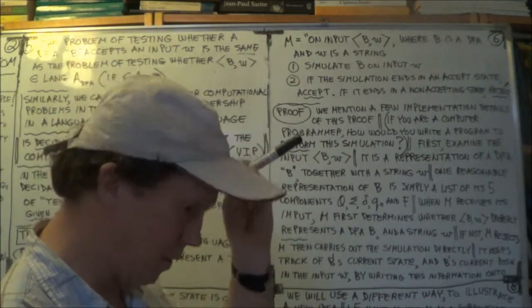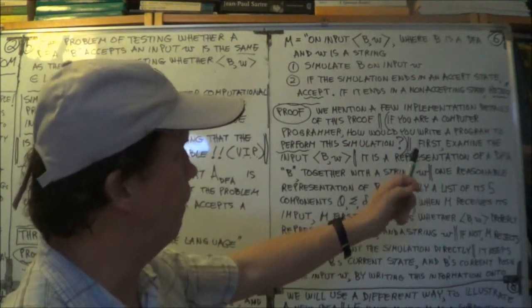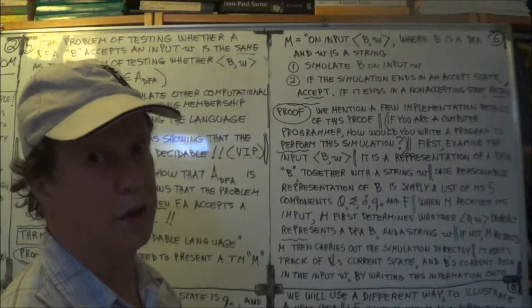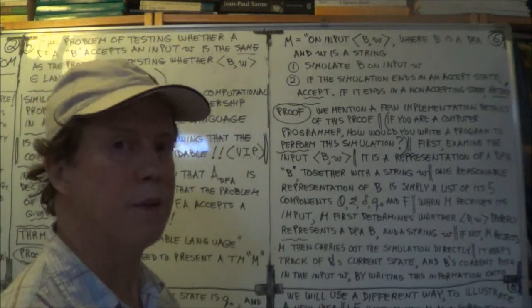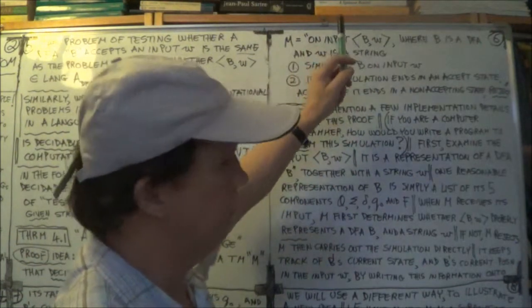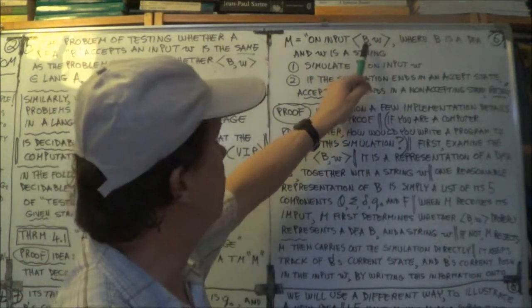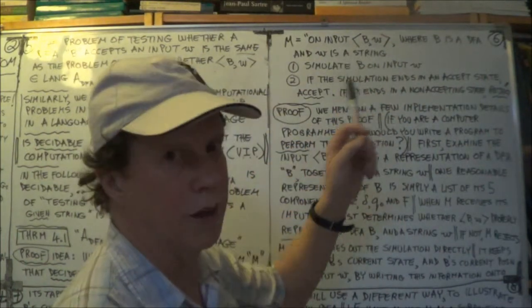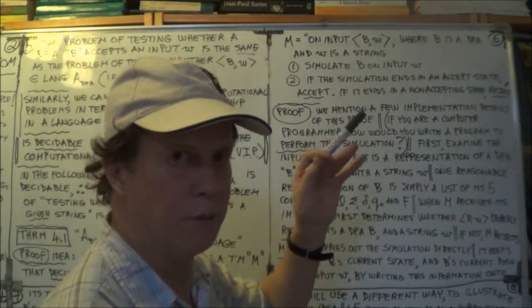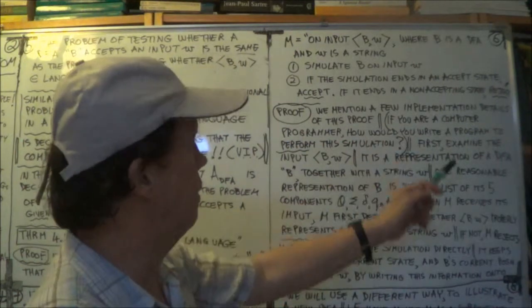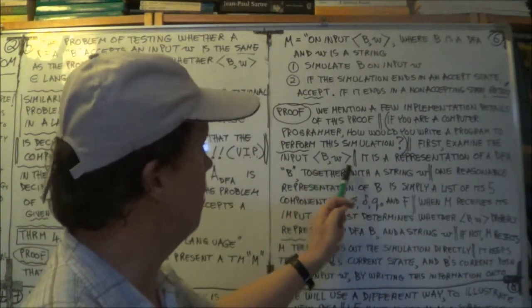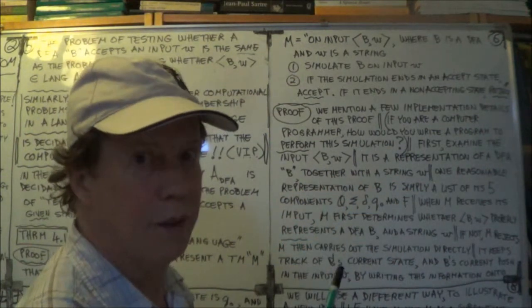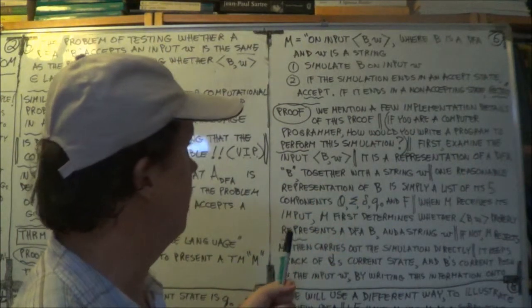Well, we've asked this kind of question before. Common sense says first have a look at your input string, and see if it's correctly formatted, right? Does it make sense? Like, the encoding, the representation of your B, is that correct? If not, reject. The encoding of your string W, is that correct? Is it properly legally formatted? If not, reject. So first thing is examine your input string. Is it correct? If not, then reject the thing.